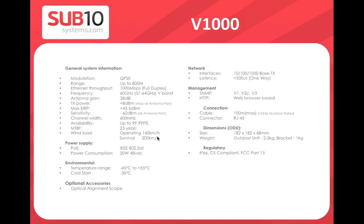The V1000 has similar specifications, is currently available, uses PoE+, and works up to 800 meters in no-rain conditions. A new generation V1000 will be introduced later with all the features seen on the V100, including SyncE, more QoS options, and so on.